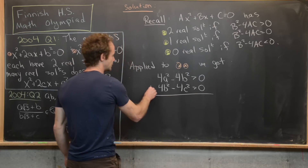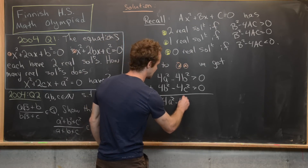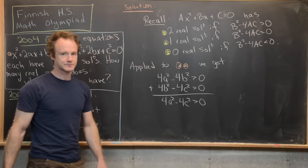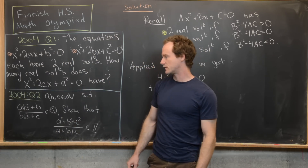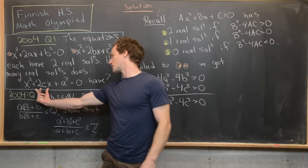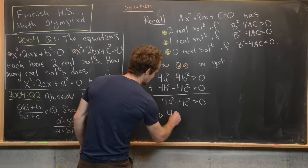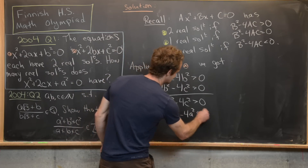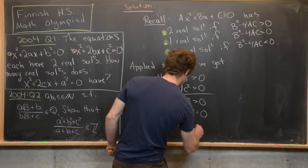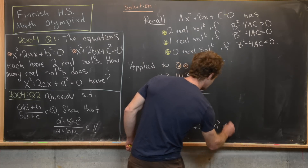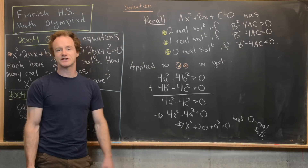Now notice we can just add those two inequalities, and the 4b² terms cancel. That tells us 4a² - 4c² > 0. But that is negative the discriminant of our goal polynomial. The discriminant of x² + 2cx + a² = 0 would be (2c)² - 4a² = 4c² - 4a², which is less than zero. Therefore x² + 2cx + a² = 0 has zero real solutions. That finishes off the first question.